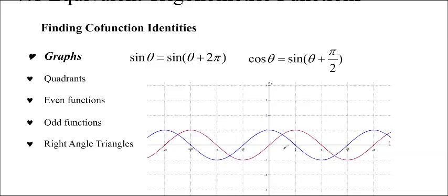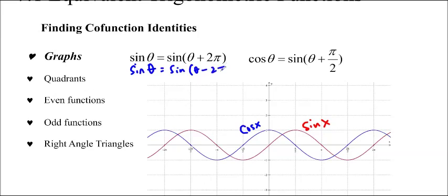If you look at the graph of sine x, which is the red function here, and the graph of cos x, which is the blue function, we can see a few properties we could use. For example, sine theta is going to repeat itself every 2 pi, so sine theta equals sine theta plus 2 pi. It also works in the negative direction, so sine theta equals sine theta minus 2 pi, and so forth.